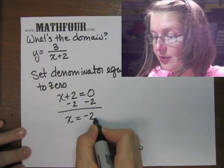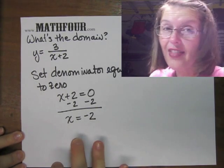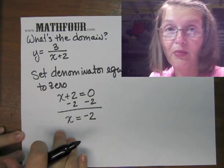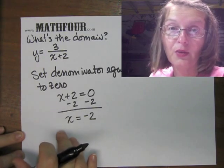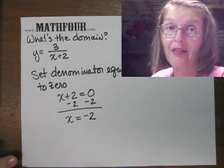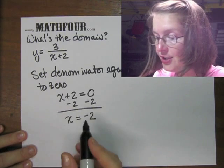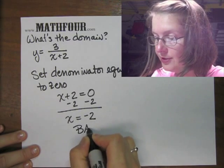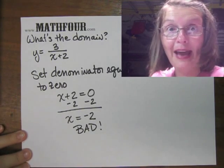So x = -2. Now remember this is not the answer to the problem. This is where the problem doesn't work. So we're actually looking for places that make the problem not valid. So x = -2 is the bad part.